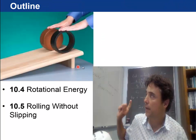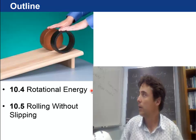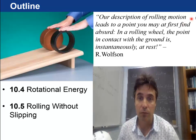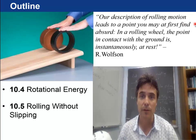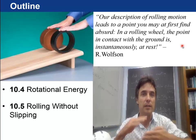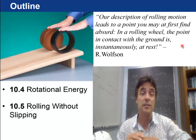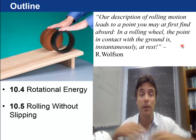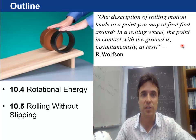And the two sections left are rotational energy and rolling without slipping. The quote above is, our description of rolling motion leads to a point that you may at first find absurd. In a rolling wheel, the point that's in contact with the ground is instantaneously at rest relative to the ground, meaning it's not sliding along, so that's what's called rolling without slipping.